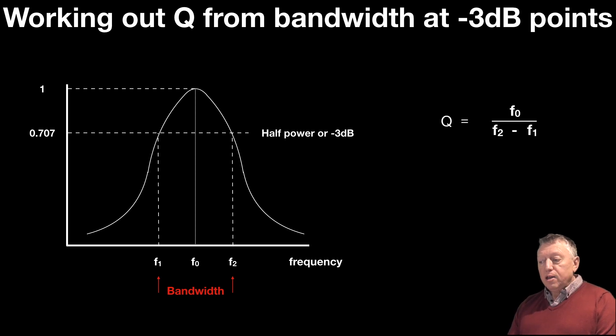So the equation, then, is Q equals F0, the frequency at which it's resonant, over the bandwidth, F2 minus F1. So two ways, then, of working out Q for a parallel tuned circuit.